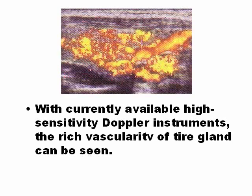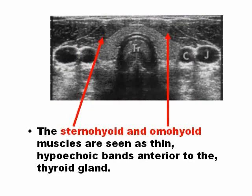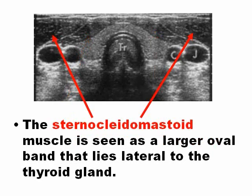This is an example of Power Doppler, and you can see the thyroid with a lot of color. The strap muscles are anterior to the thyroid; the most important are the sternohyoid and the omohyoid. The sternocleidomastoid muscles are lateral and anterior, and are a very important landmark for the localization of the thyroid gland.